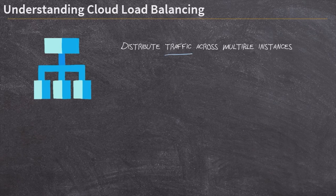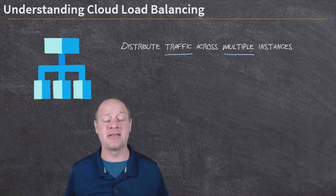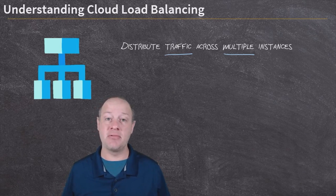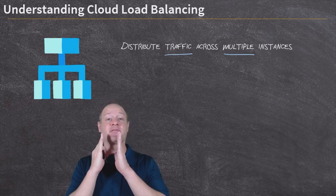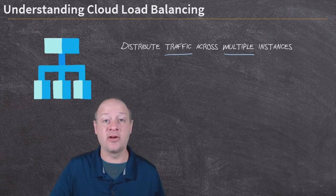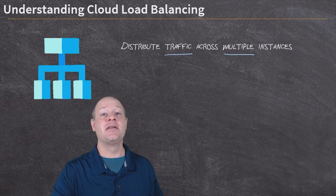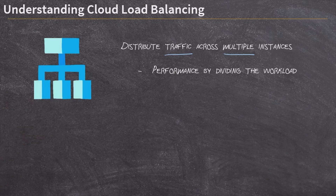Load balancing basically allows you to distribute user traffic across multiple instances of your application. So if you've got a website getting hit 500 times a second, one processor running one copy of that website may not be able to keep up. So you run two copies on two different computers, and those 500 requests every second get split across those two different instances. Two instances can run in parallel at twice the speed of one, and four instances at four times the speed.